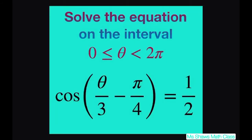Hey everyone, we're going to solve the equation on the interval 0 to 2π of cosine of theta divided by 3 minus π divided by 4 equals 1 half.